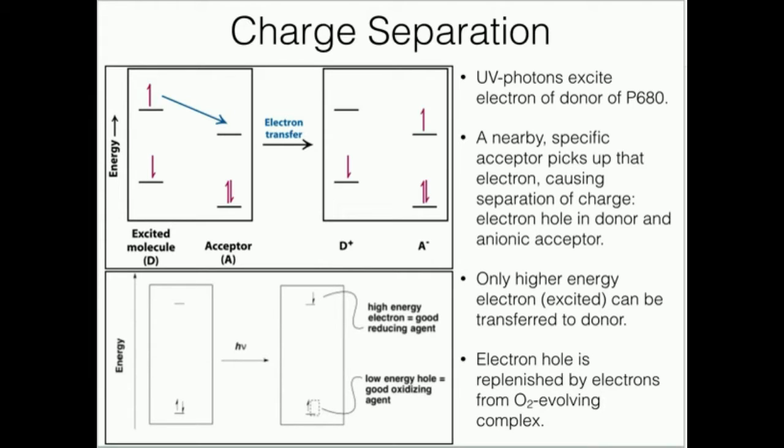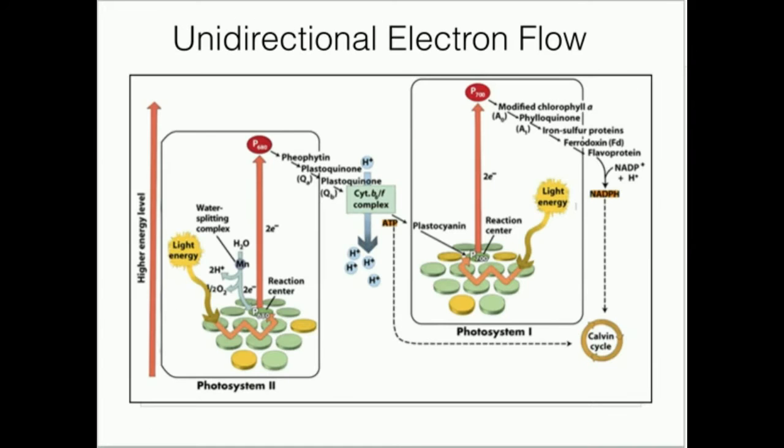This high energy electron right here, and by the way this part of the diagram is this over here, the higher energy electron can be transferred to a nearby electron acceptor, which in the case of photosystem II is this acceptor pheophyton.